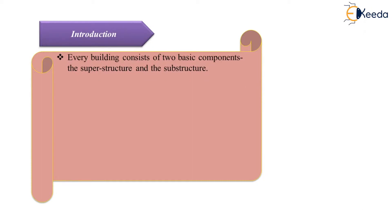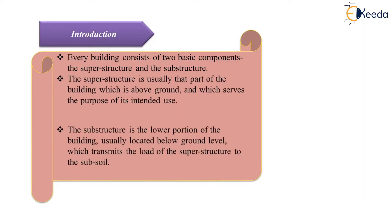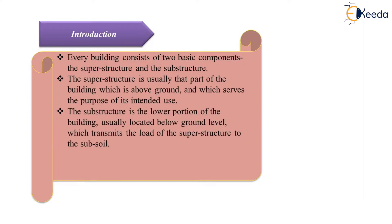First of all, we know that every building consists of two basic components: substructure and superstructure. The superstructure is that part of a building which is above the ground level and it is used to serve the purpose of its intended use. Similarly, the substructure is the part of the structure which is basically below the ground level and it is used to transmit the load of the superstructure to the sub soil.